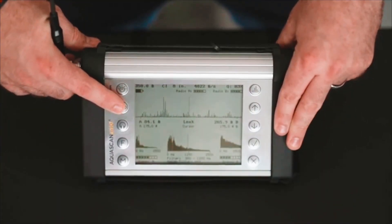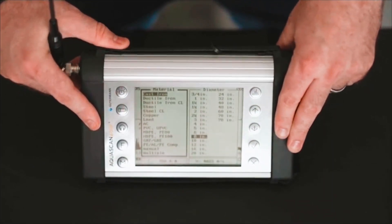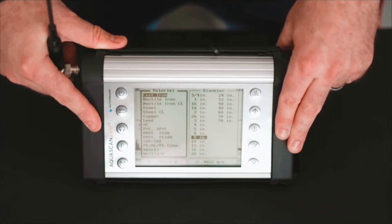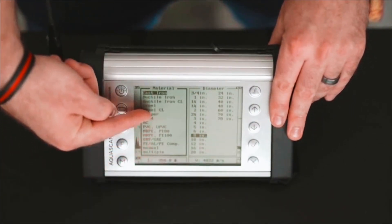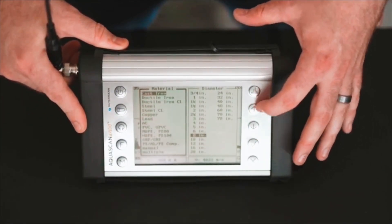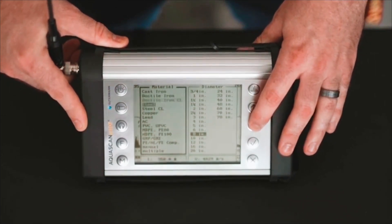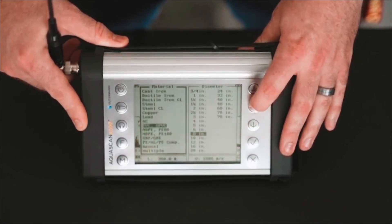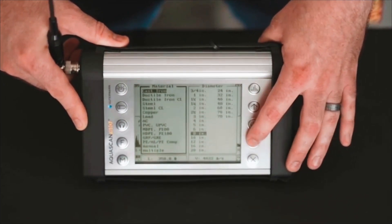For each correlation, the user must first input the pipe material, diameter, and length of pipe between sensors. The input of this data is done by selecting the pipe button. The first of the three boxes is active as indicated by the bold border. Use the up and down buttons to select the appropriate material. Press the check button to set your selection and move the bold border to the next box.